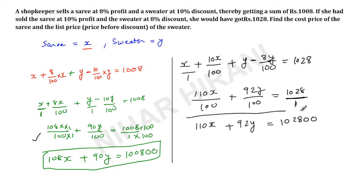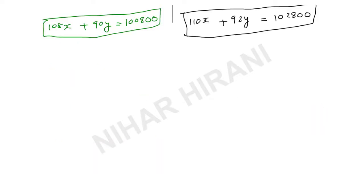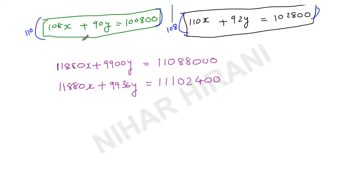Now I can solve these two equations by any method that I like. So I will solve this by elimination, my favorite method. So I will multiply these all by 110, that is the coefficient of X in equation 2, and I will multiply these all by 108, that is the coefficient of X in equation 1. So after multiplying these all by 110, I got this, and after multiplying these all by 108, I got this.